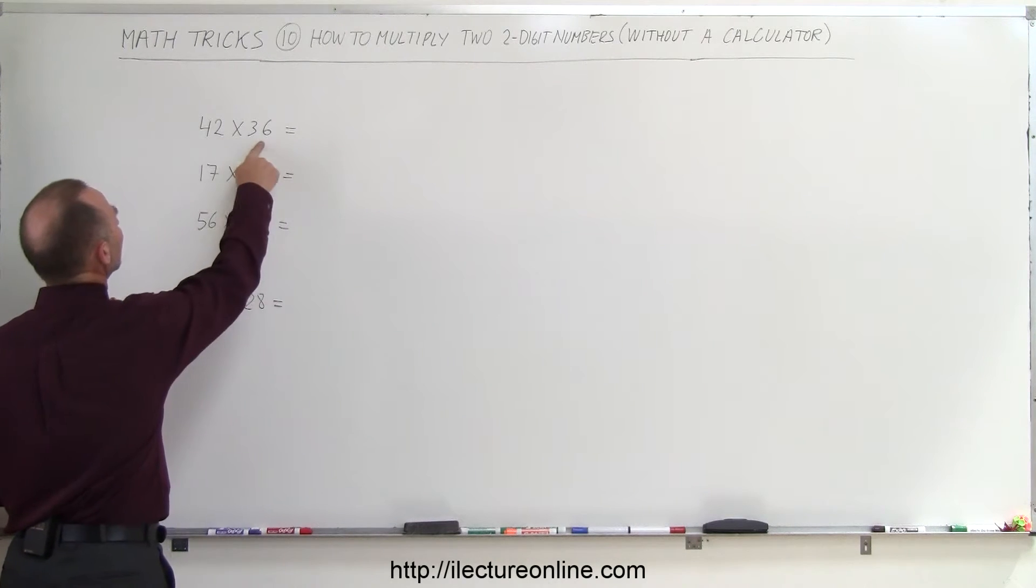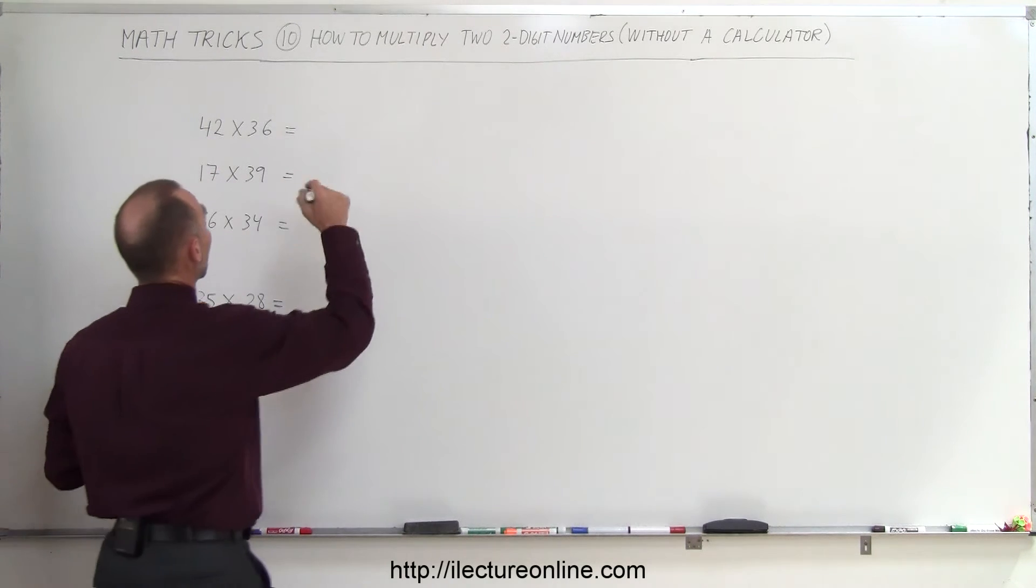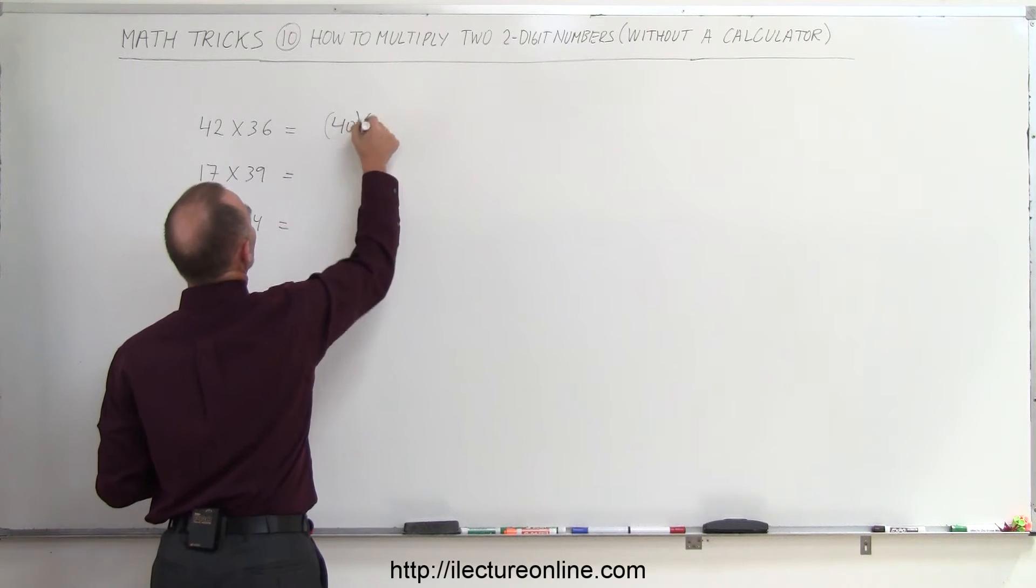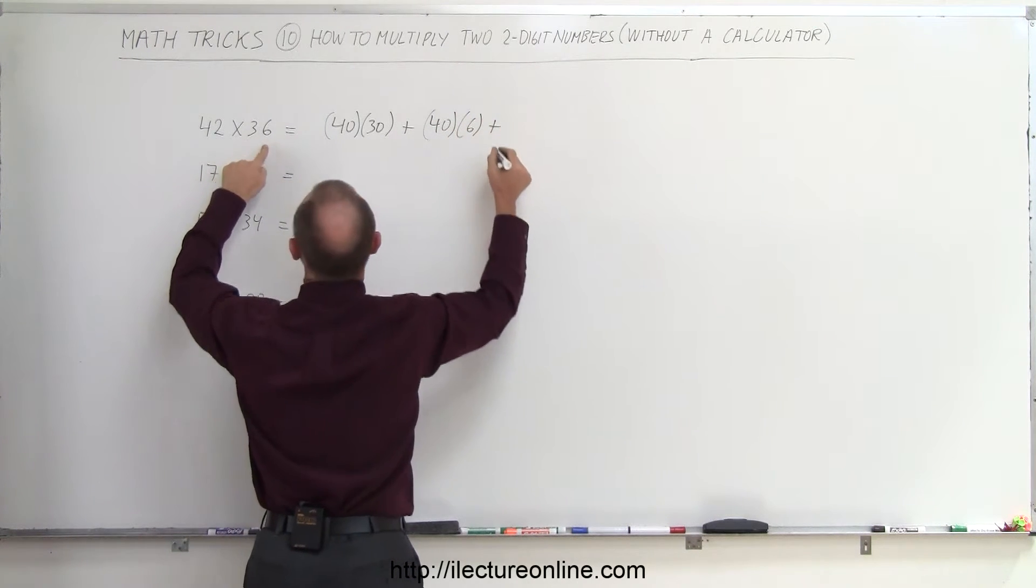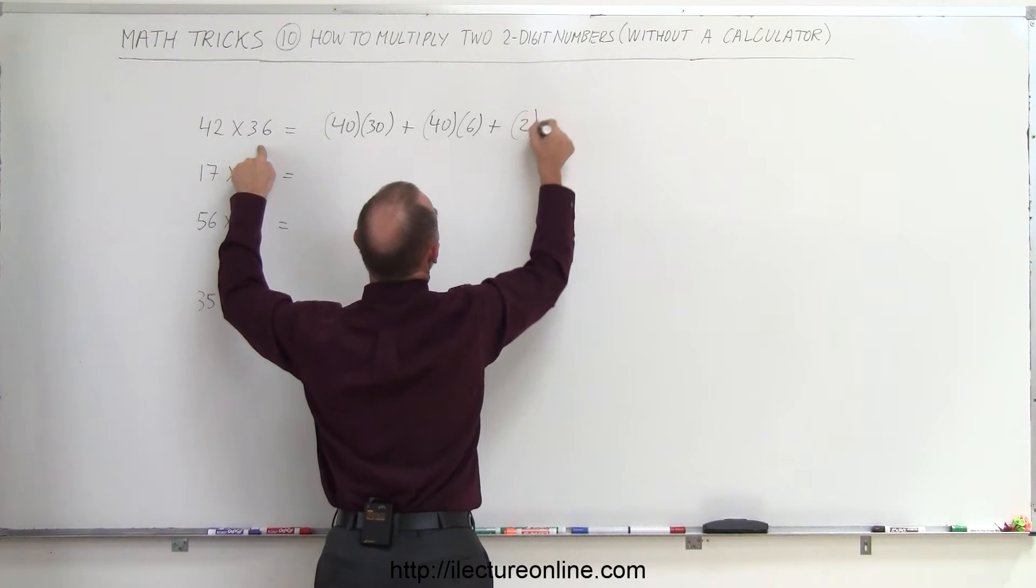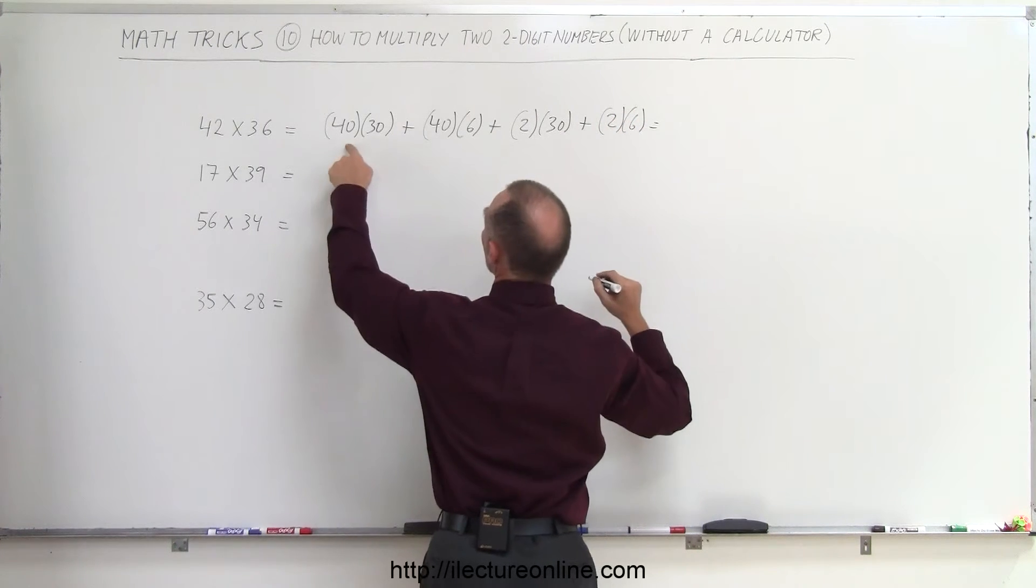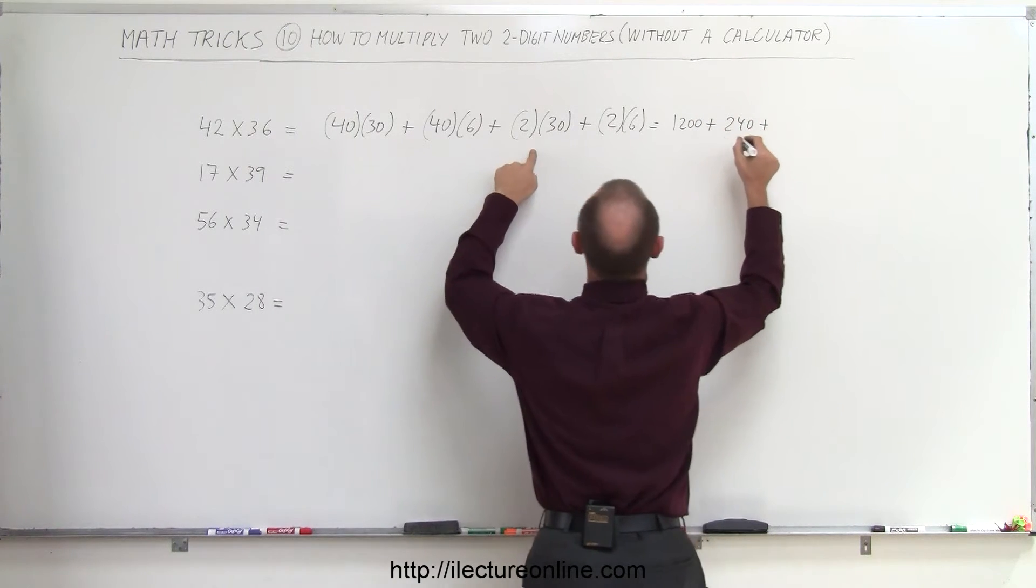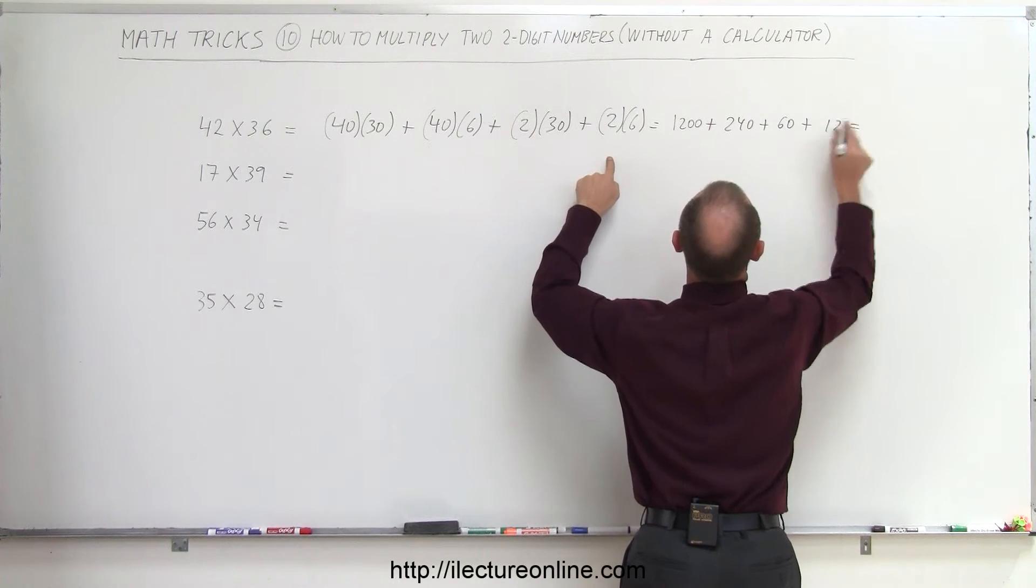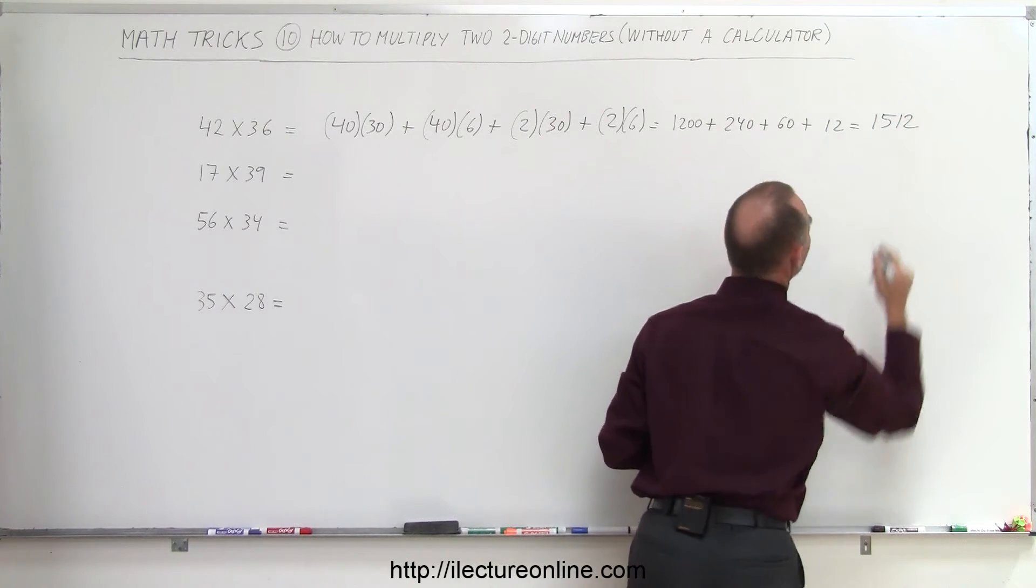Think of the first multiplication as 40 plus 2 multiplied times 30 plus 6, and then we multiply each of those separately. We start out by saying what's 40 times 30, so 40 times 30 plus 40 times 6, plus 2 times 30, and then finally plus 2 times 6. If I add them all together, we have 1,200 plus 240 plus 60 plus 12. 240 plus 60 is 300, plus 1,200 is 1,500, plus 12 is 1,512. That's the technique that we use.